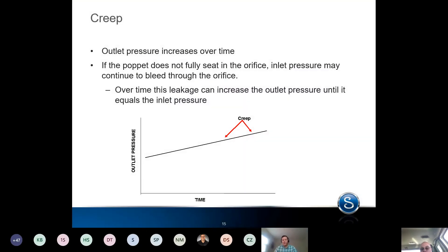Now, another aspect of regulator behavior, or I guess some of the regulator issues you can see, is creep. And this is the most common issue I've seen in the field. Creep is the rise in outlet pressure when there's no flow.